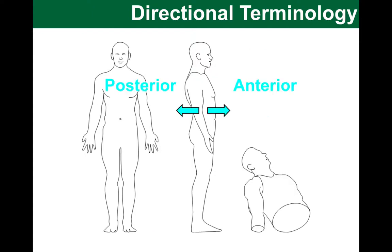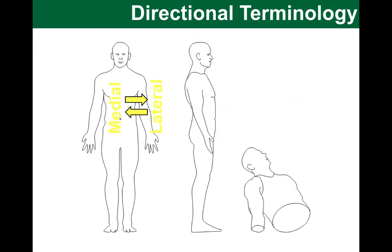Next are anterior and posterior. Anterior refers to something being in front of you, while posterior would be behind you. What other directions can we think of? Here we have the medial part, which is close to the midline of the body, while the lateral part is further away from the midline.